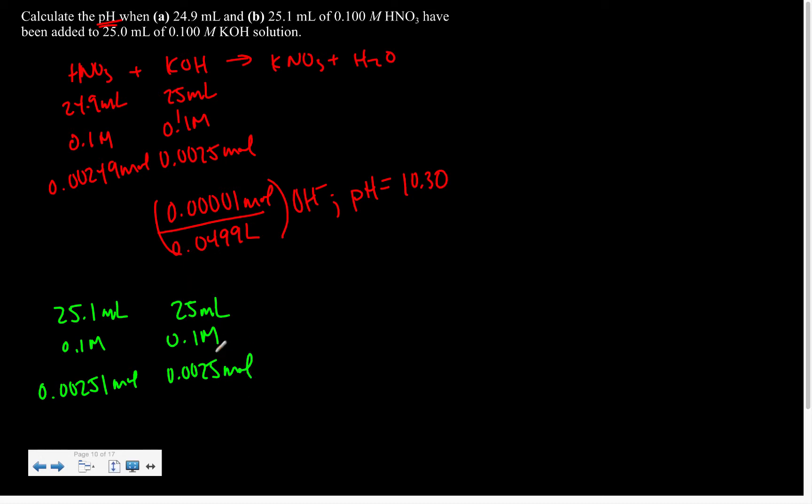And again we're going to put it over our total volume at this point in time, and that's going to give us the molarity of the nitric acid, or more importantly the molarity of my hydronium ion, since nitric acid is a strong acid and dissociates completely.